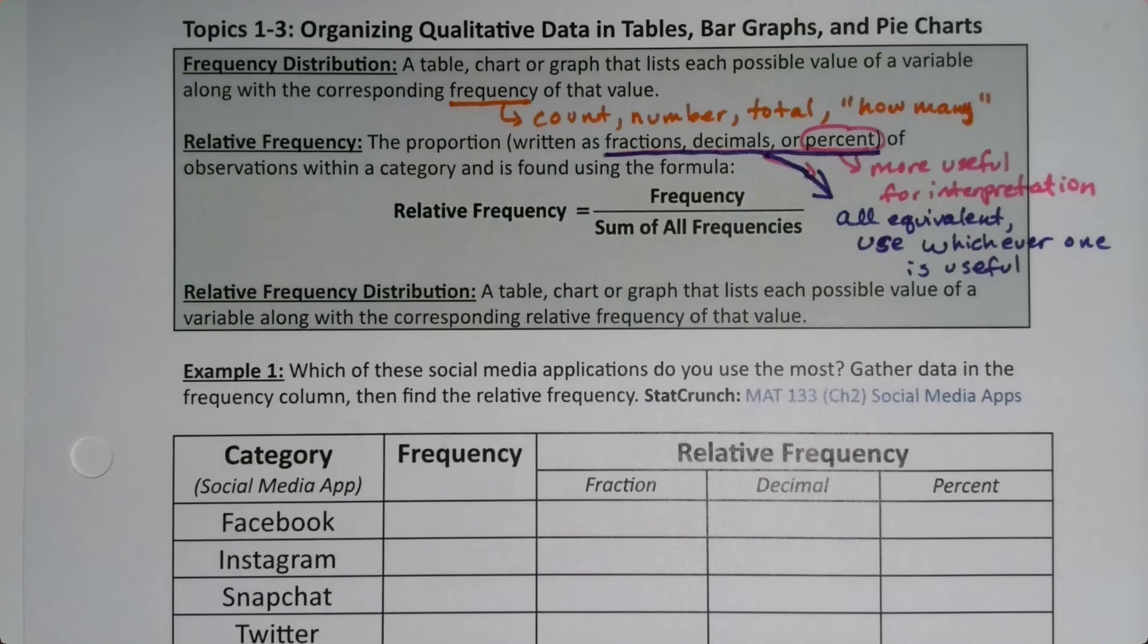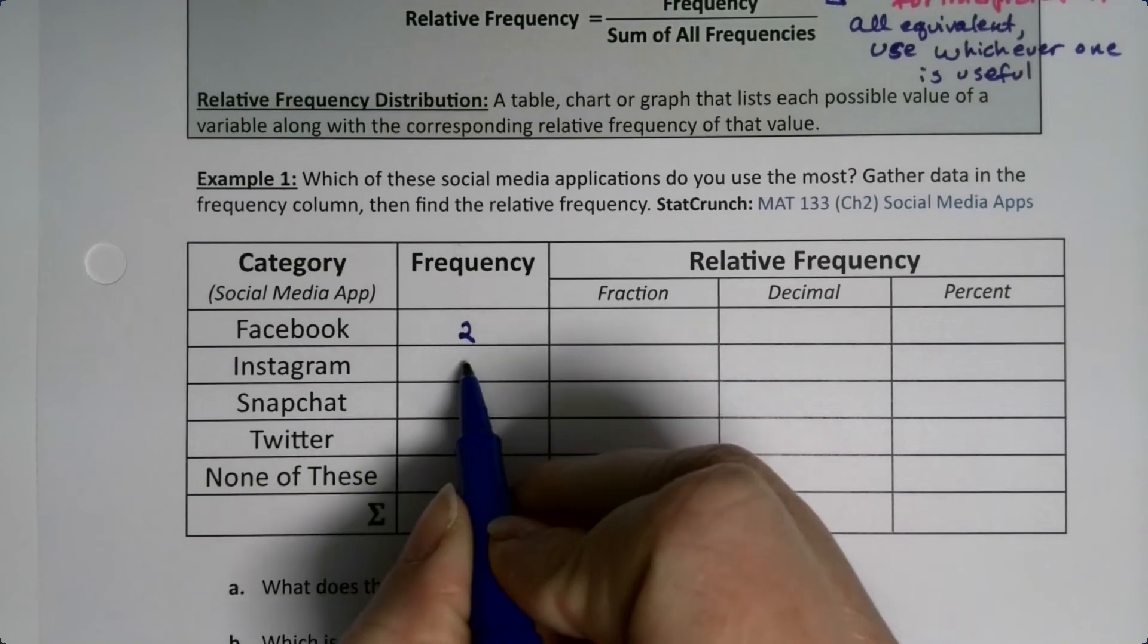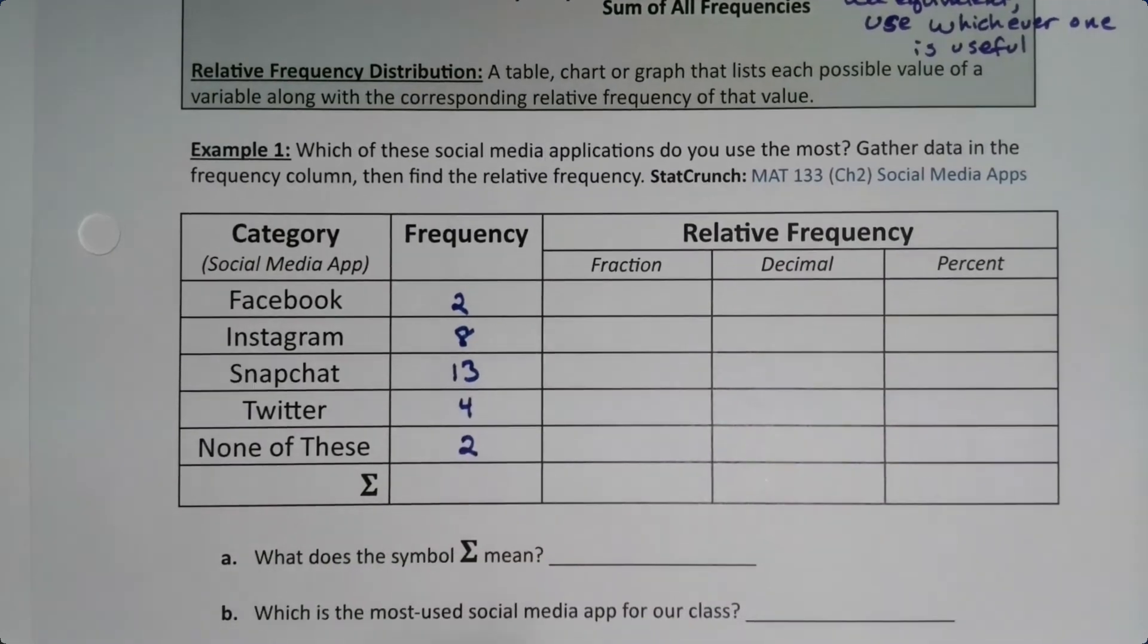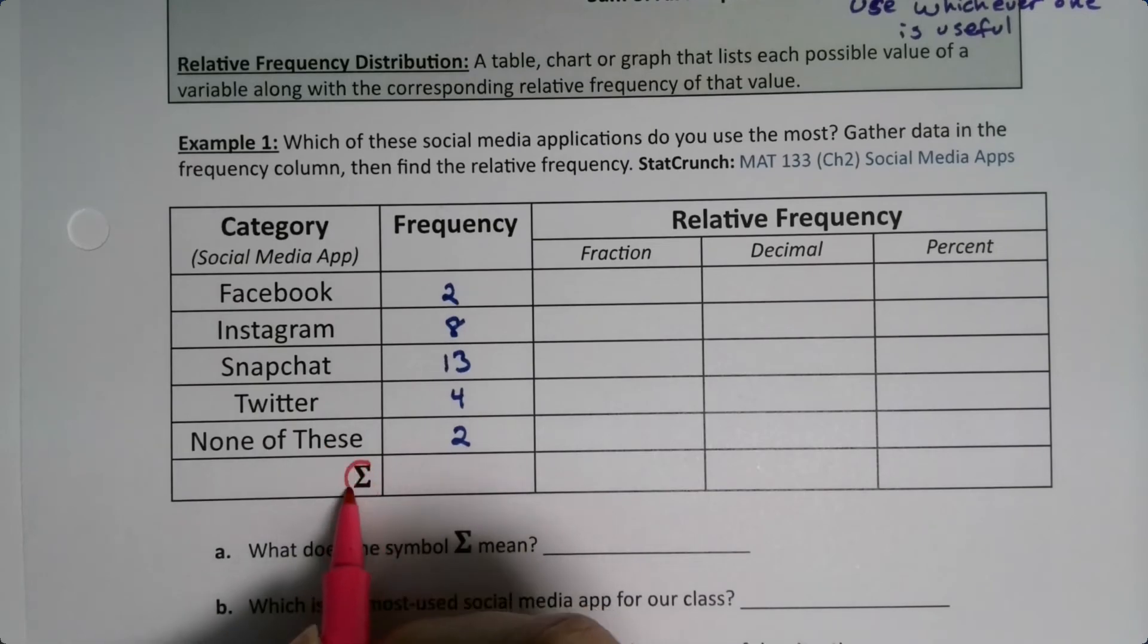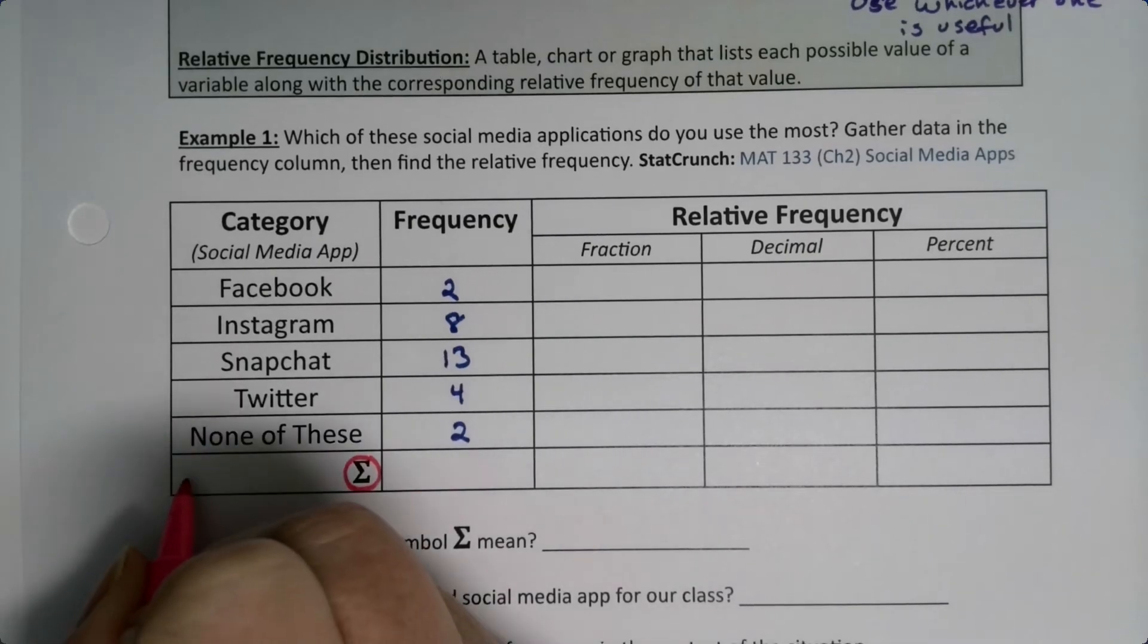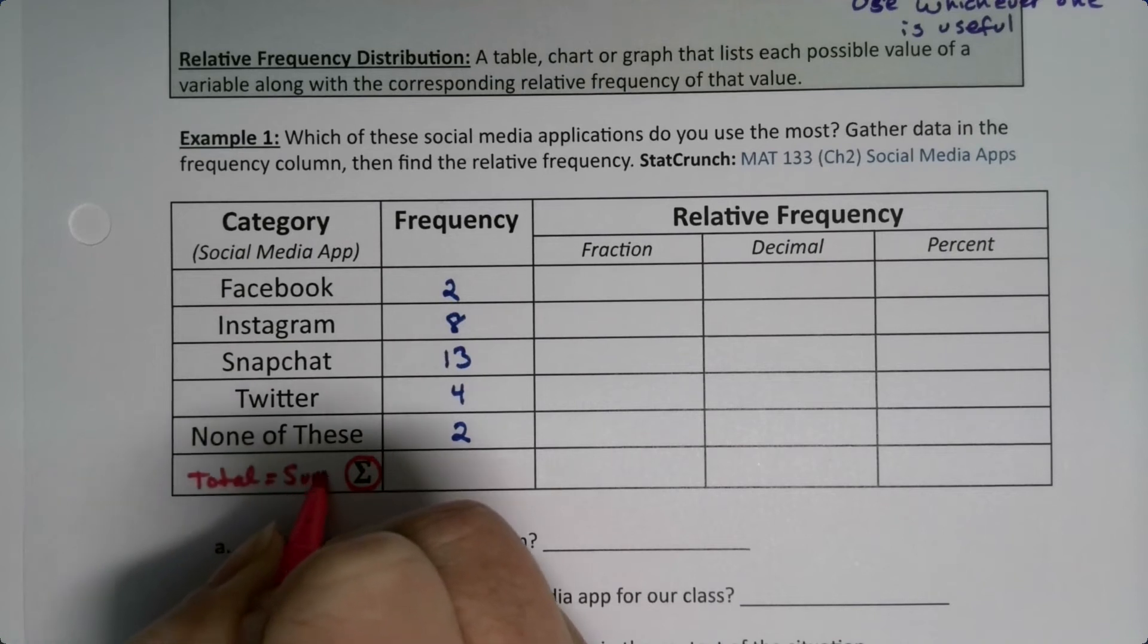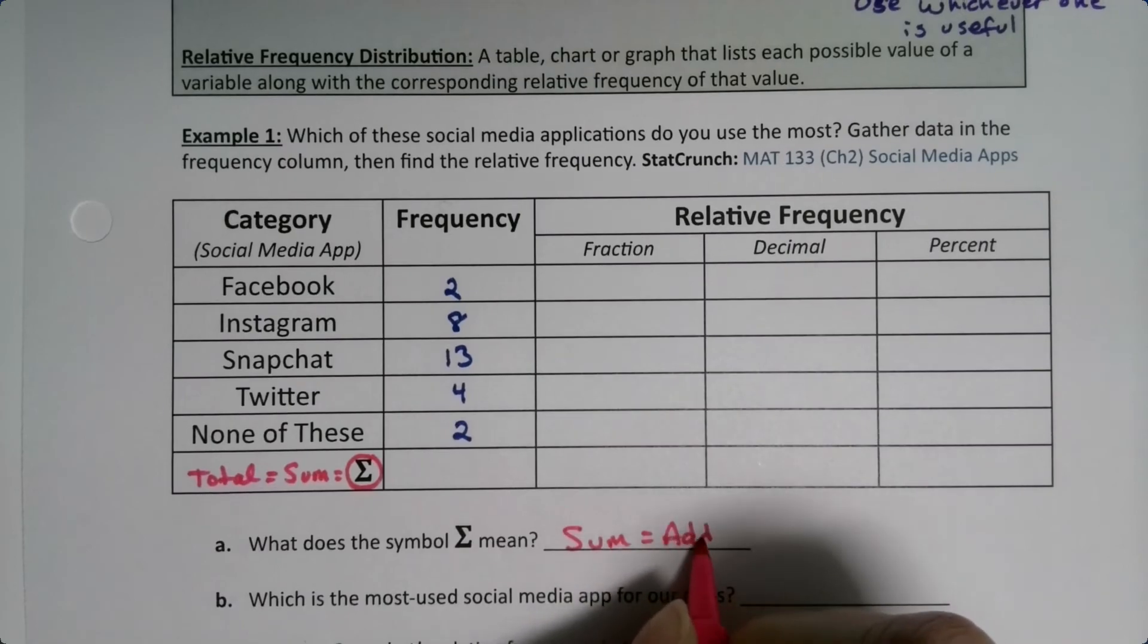Okay, so which of these social media applications do you use most? Gather data in the frequency column, then find the relative frequency. And I believe I have some data from a previous semester available. So the values I have from a previous semester I surveyed my class are 2, 8, 13, 4, and 2. Now the first thing I want to do is find the total. That's what this symbol down here means. This symbol is actually the Greek letter capital Sigma. It means the total, or if you like, the sum.